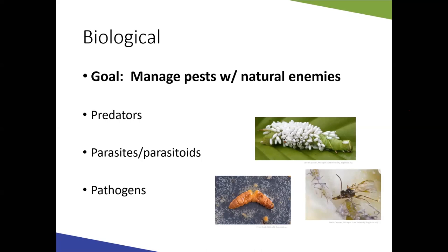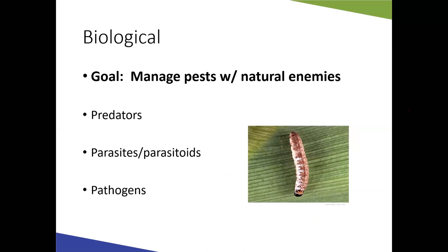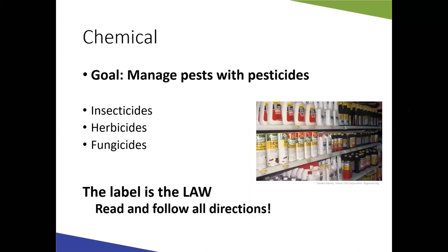Parasitoid insects lay their eggs inside other insects and eat them. If you see a hornworm with white cocoons sticking out of it, those are cocoons of a wasp that has eaten the inside of that caterpillar — leave it in the garden, and those wasps will hatch and attack other caterpillars for you. Insects also get diseases themselves, and cool wet weather can increase the rate of pathogens controlling insect populations.